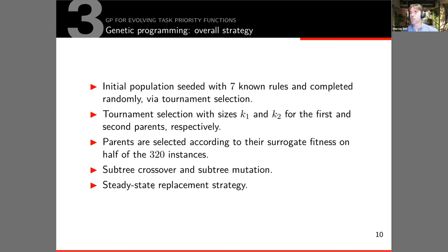These are parameters which have been calibrated, and the parents are selected according to the surrogate fitness on half of the instances. We have a set of 320 instances, and evaluate on half, 160 of these instances. We apply subtree crossover and then subtree mutation, and we have a steady-state replacement strategy. Population size after calibration is 750.